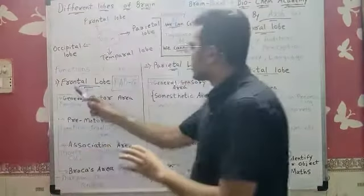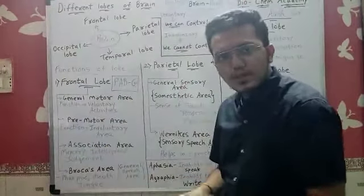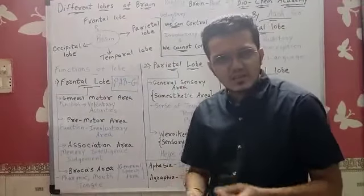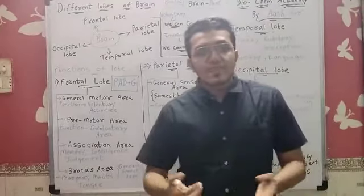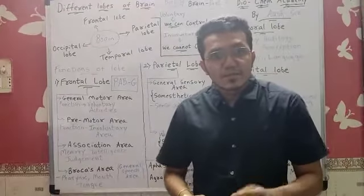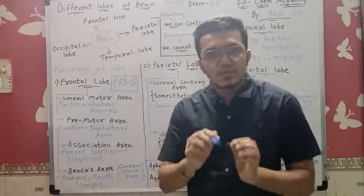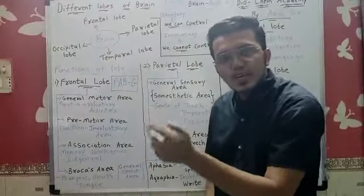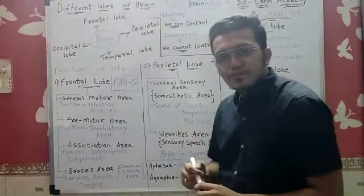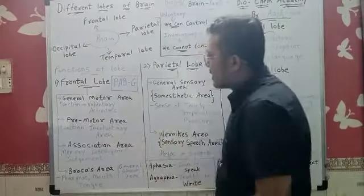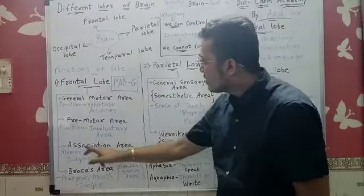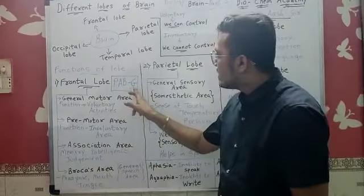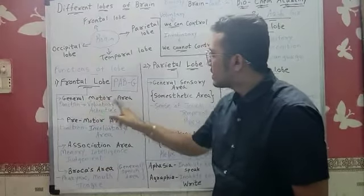Frontal lobe consists of four areas. Those four areas, to learn the name, I made a small trick. The most famous game youngsters are getting addicted with is PUBG. So like this is the name PUBG. P stands for pre-motor area, A stands for association area, B stands for Broca's area, and G stands for general motor area.